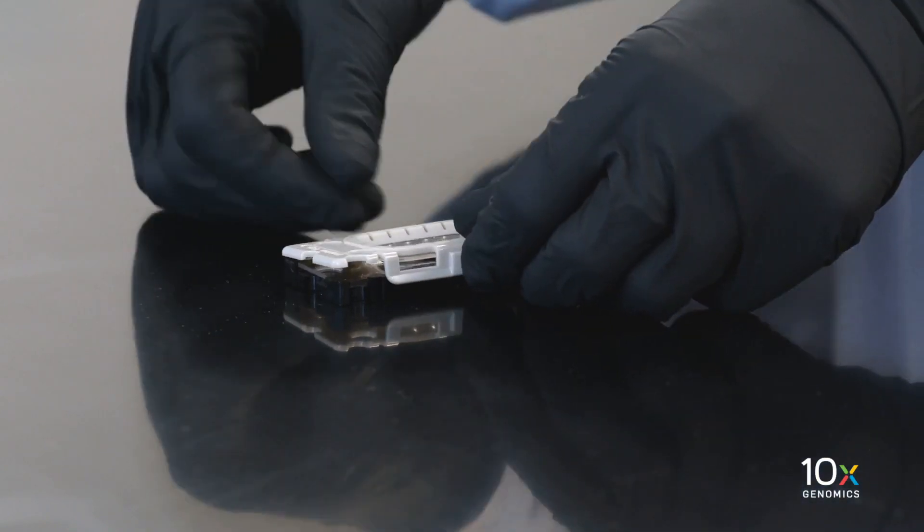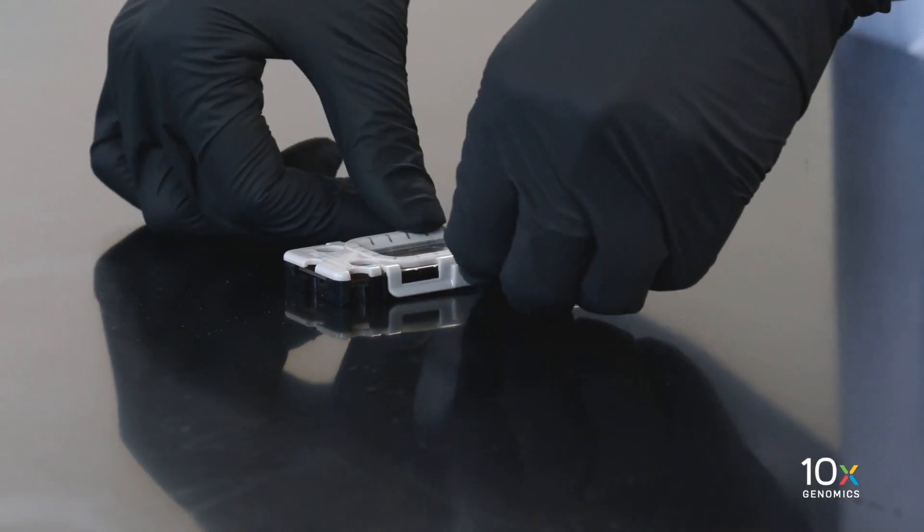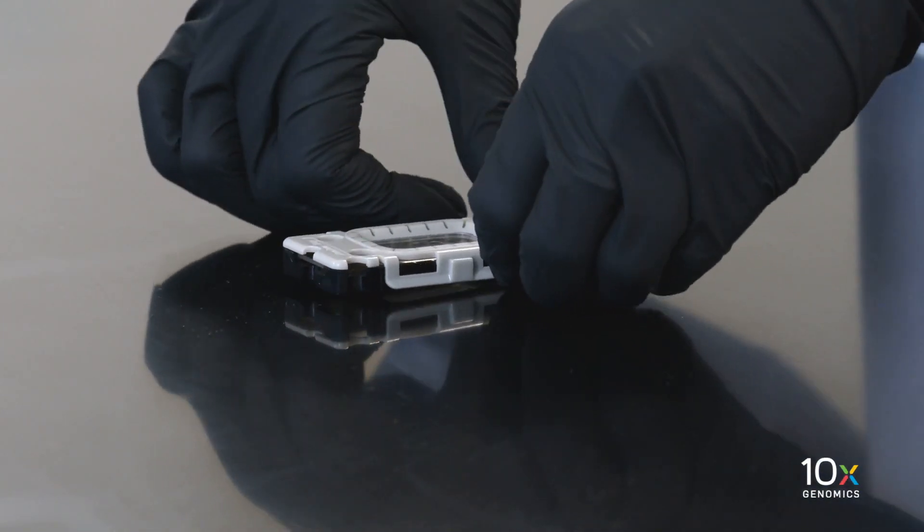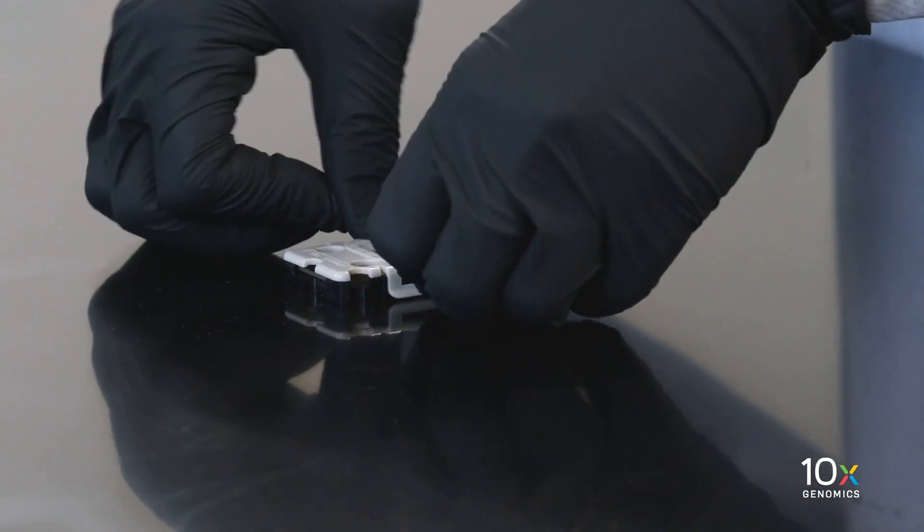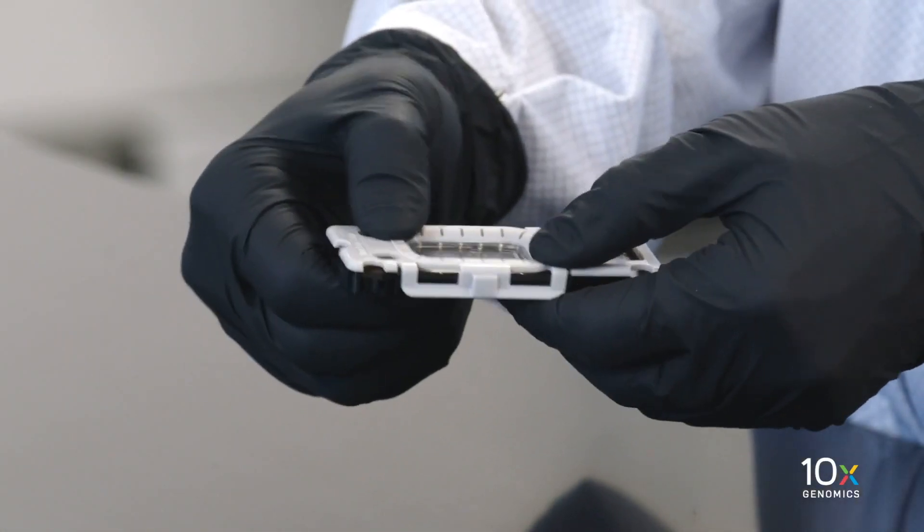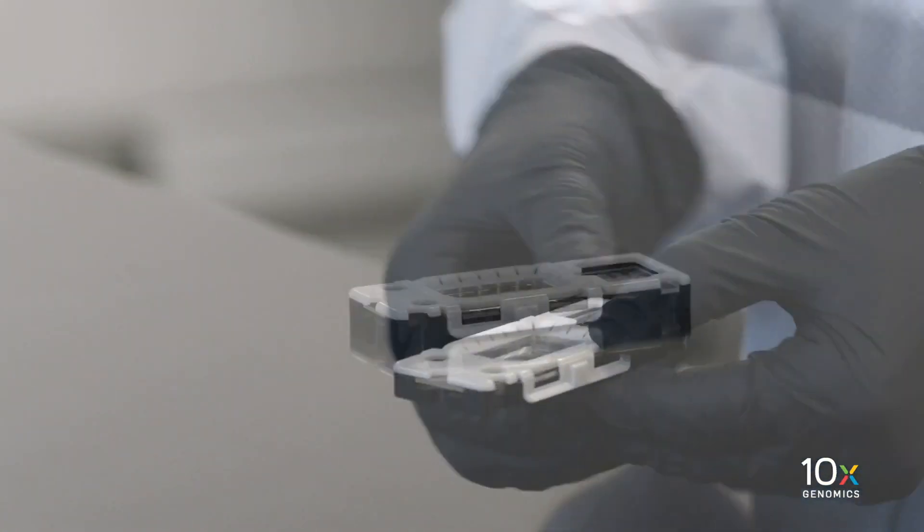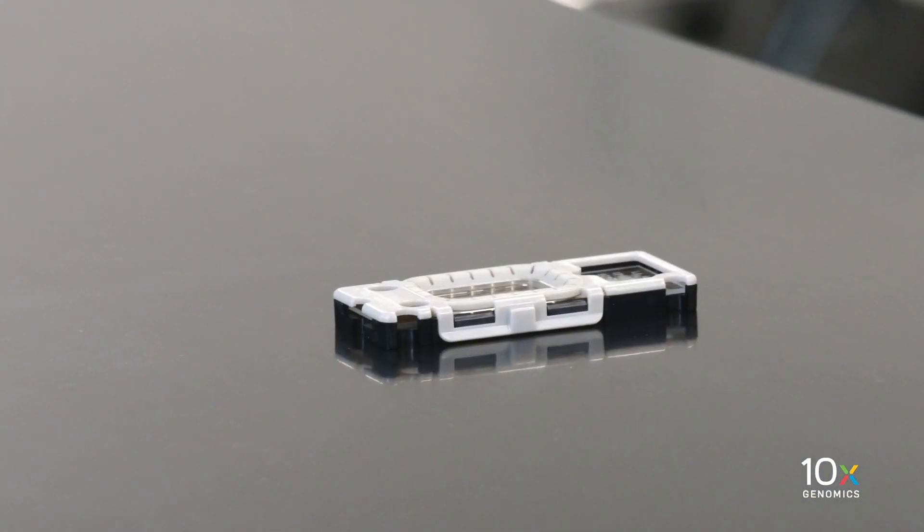Secure the outer clips on the top half of the cassette with the outer tabs of the bottom half of the cassette on both sides. Press firmly on the top of the cassette until it clicks shut and the two halves are flush against each other. We are ready to add reagents into the assembled cassette.